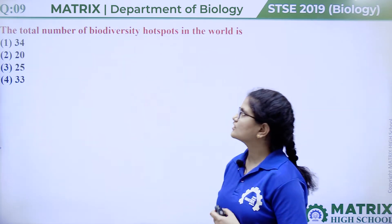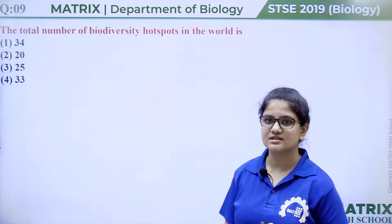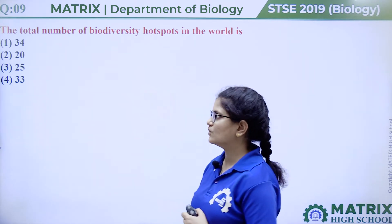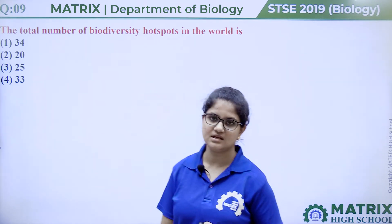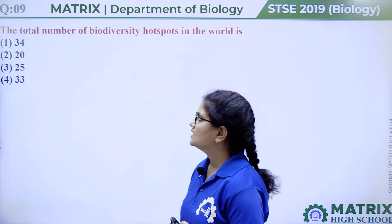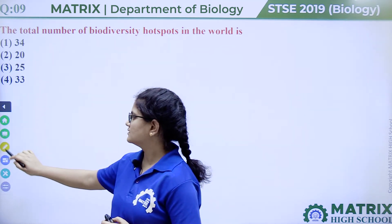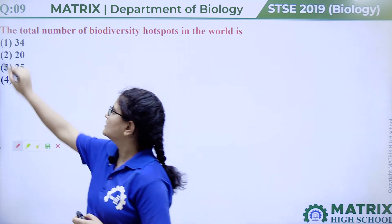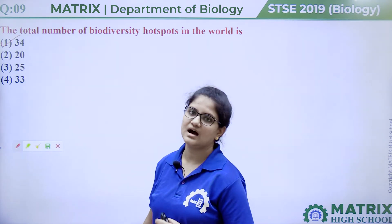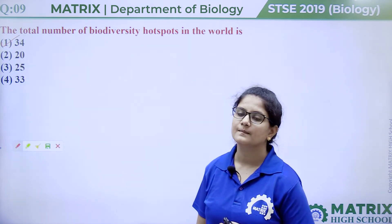The total number of biodiversity hotspots in the world is 34, 20, 25, or 33. The answer is option one, 34. There are 34 biodiversity hotspots in the world.